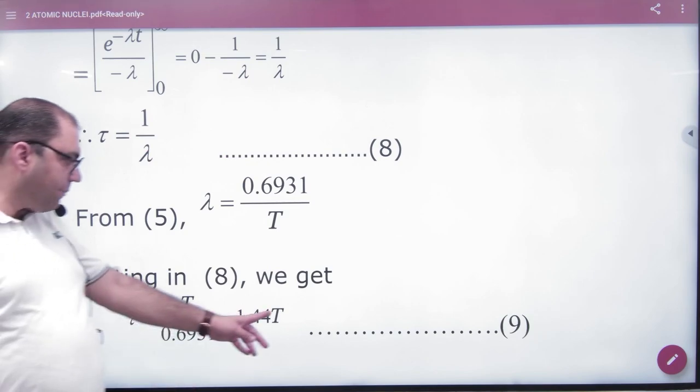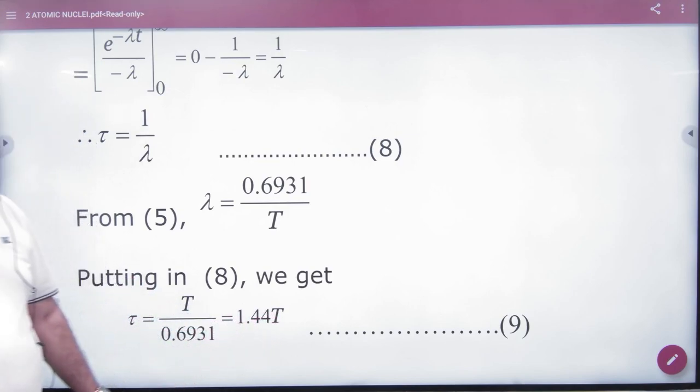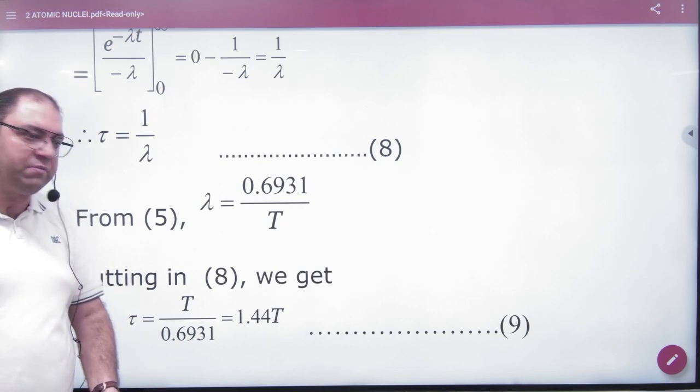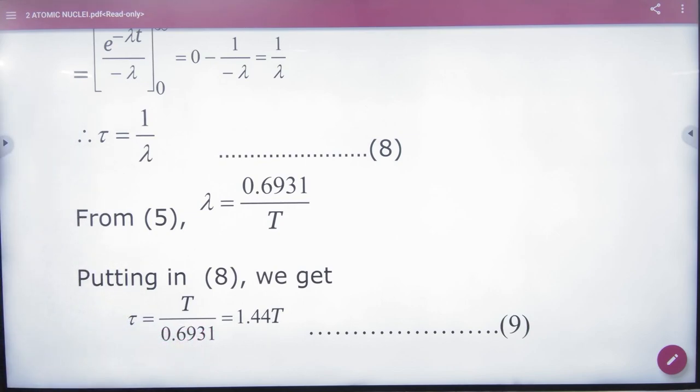So the formula is 1.44 times half life period. Half life period is T. It will multiply it by 1.44. So average life which is half life which is 1.44 multiplied by answer. Just note this formula.